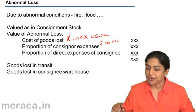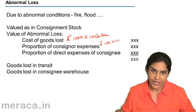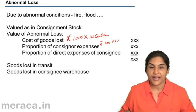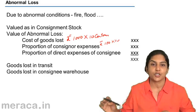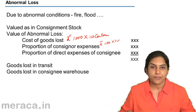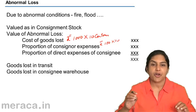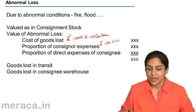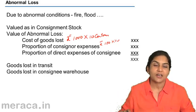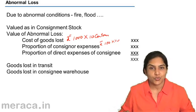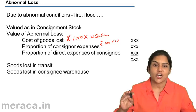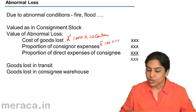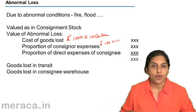Next, you have the proportion of direct expenses of the consignee, if any. In our example, the consignee did incur a direct cost — a transport cost for carrying goods from the railway station to the warehouse. However, the 10 cartons were lost even before these costs were incurred. But had the loss occurred later, that proportion of consignee expenses would also be included in valuing the abnormal loss.